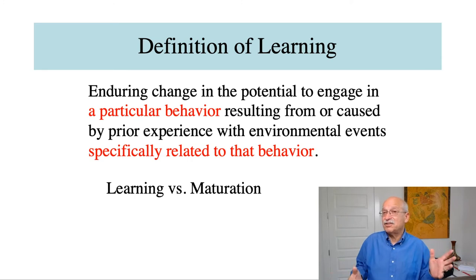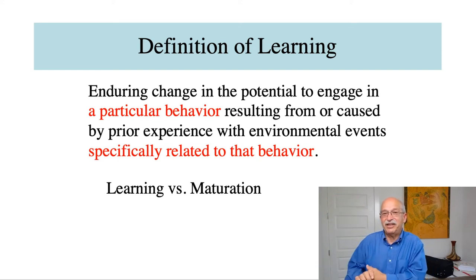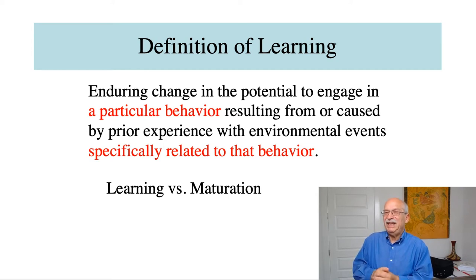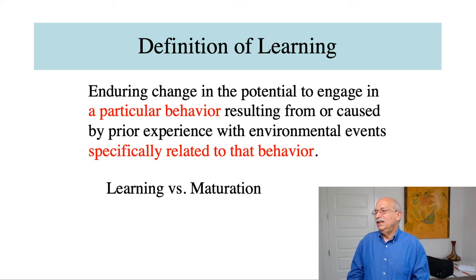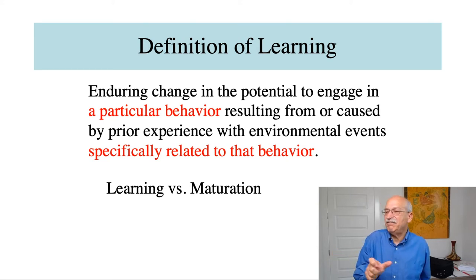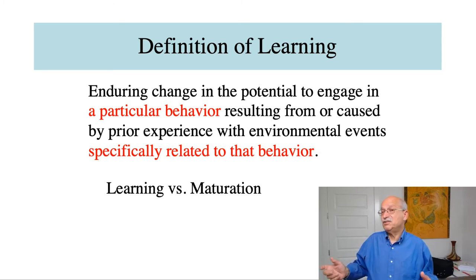Maturation does influence all kinds of responses — kids who are four feet tall are able to do a lot of things that a kid who is three feet tall cannot. But because the behaviors are not specific to one action or one particular skill, we talk about it in terms of maturation rather than learning. Maturation is also the reason we have the phrase at the end of the definition referring to learning being caused by experience with environmental events particular to the behavior being observed. Maturational changes require environmental input, but those inputs are not specific to the responses that change as a result of maturation.